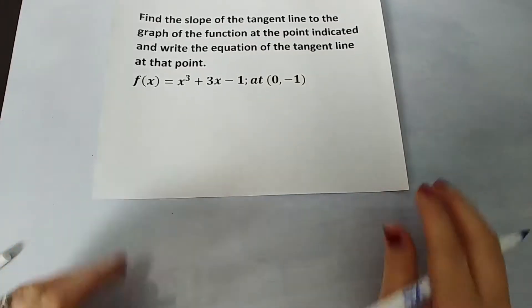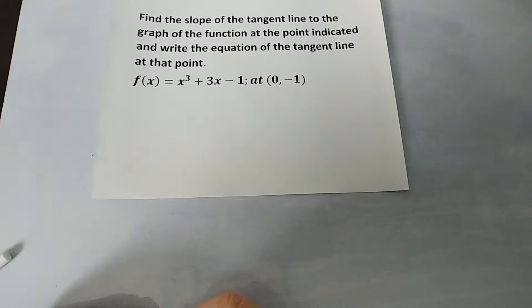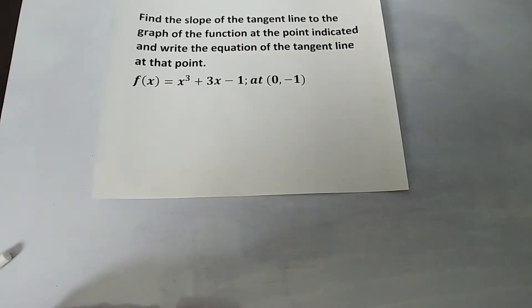Hey guys, we're going to tackle a problem that we see a lot. It says find the slope of the tangent line to the graph of this function at the point indicated, and then write the equation of that tangent line at that point.